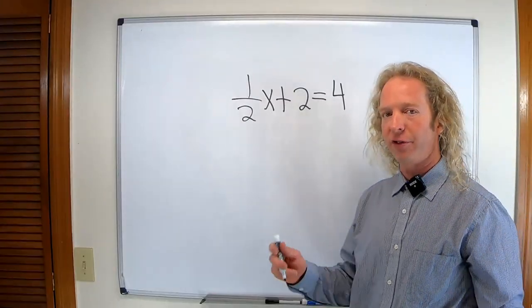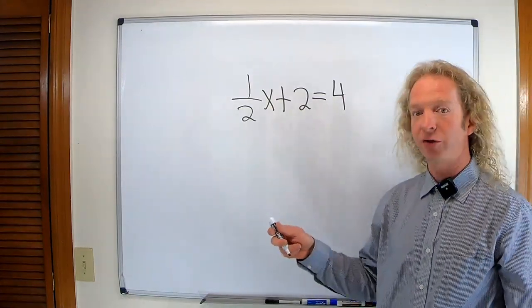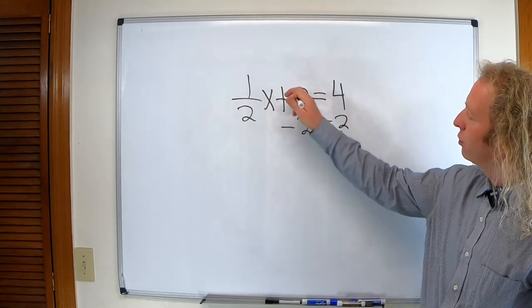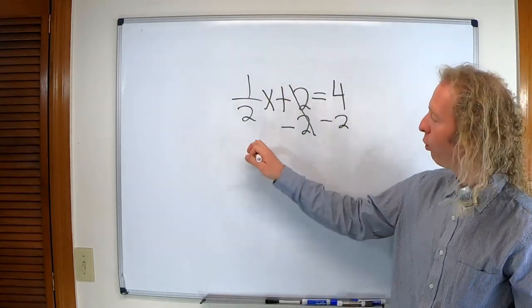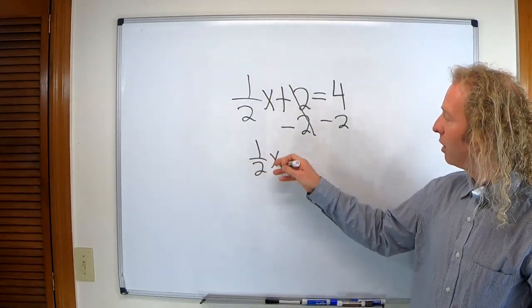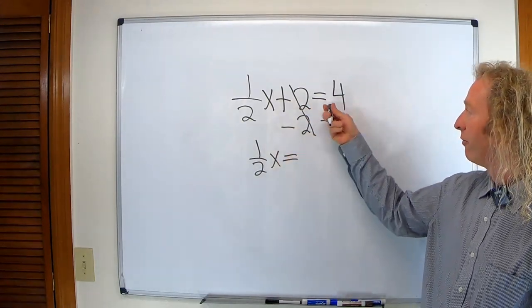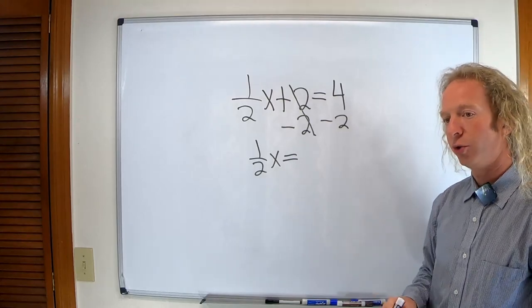So we're going to solve this equation for the value of x. We'll start by subtracting 2 from both sides. So the 2's cancel. So we have one half x. These cancel, so you get 0. We put the equal sign here, and 4 minus 2 is equal to...